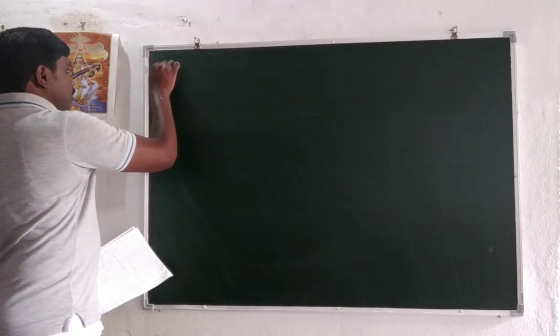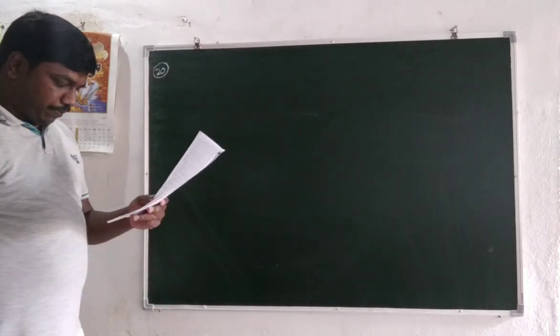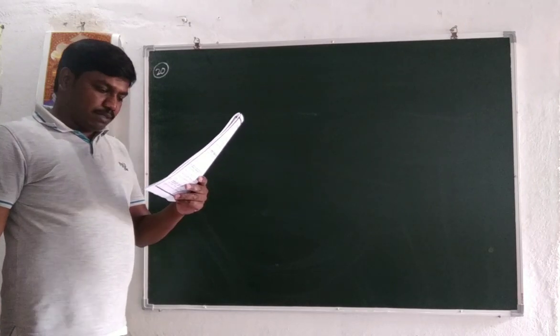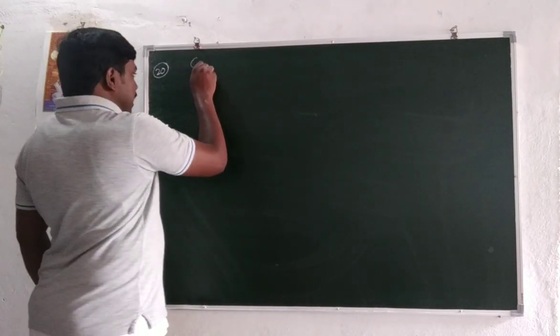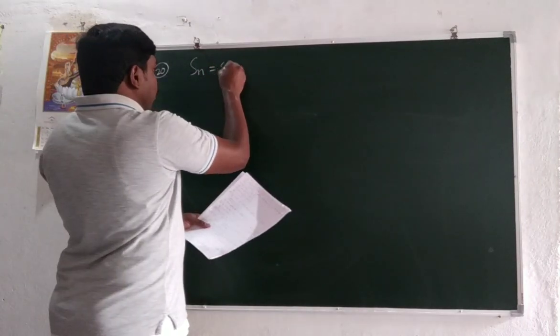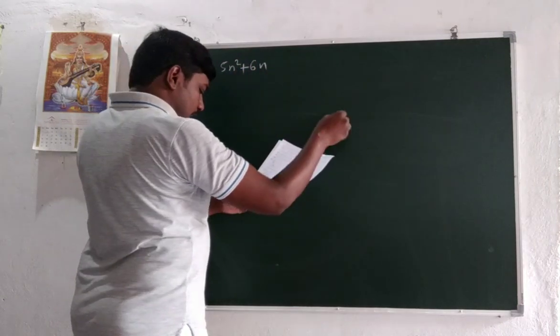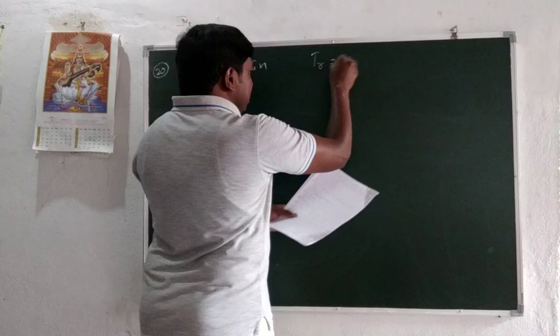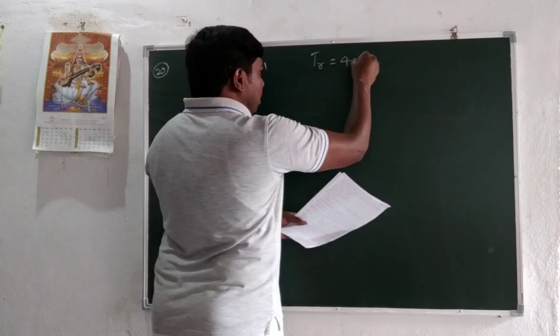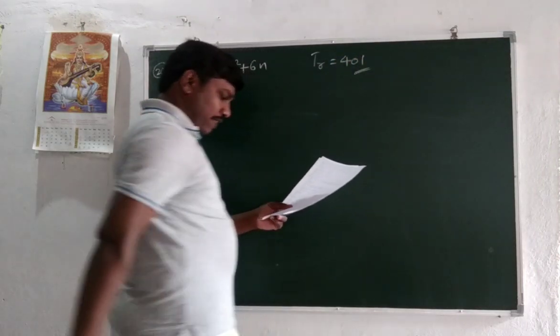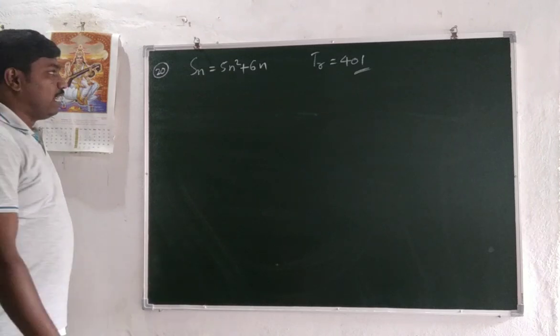Next question number 20. The sum of n terms of AP, Sn, is equal to 5n² + 6n, and the rth term Tr is equal to 401. Then what is the value of r? What is the value of r?